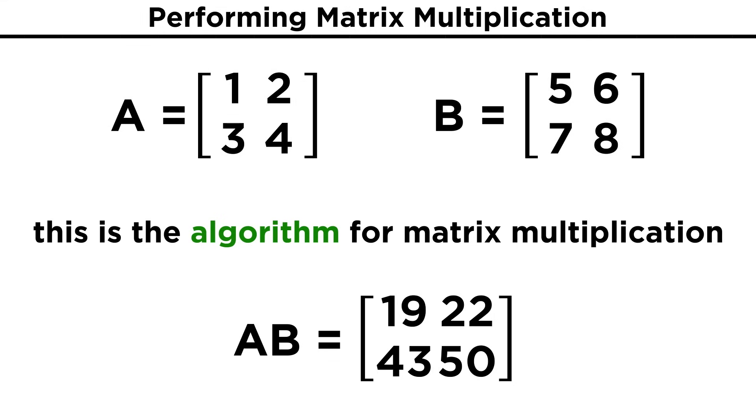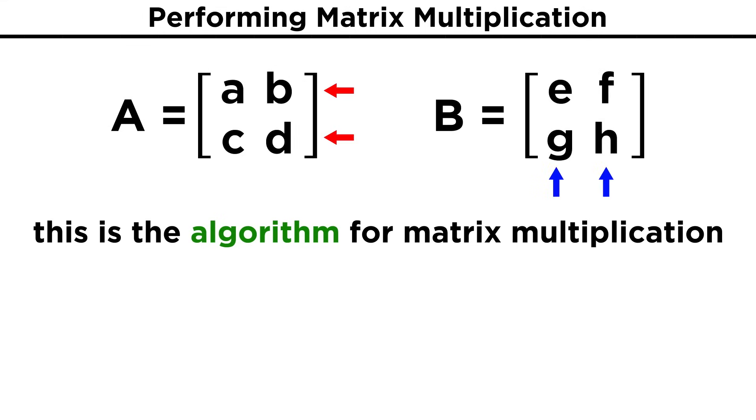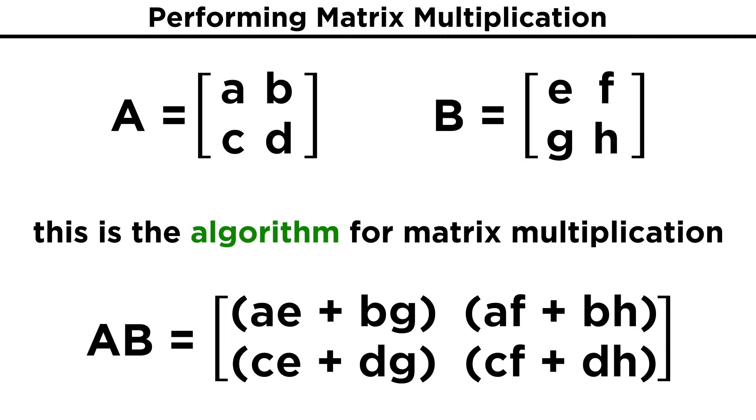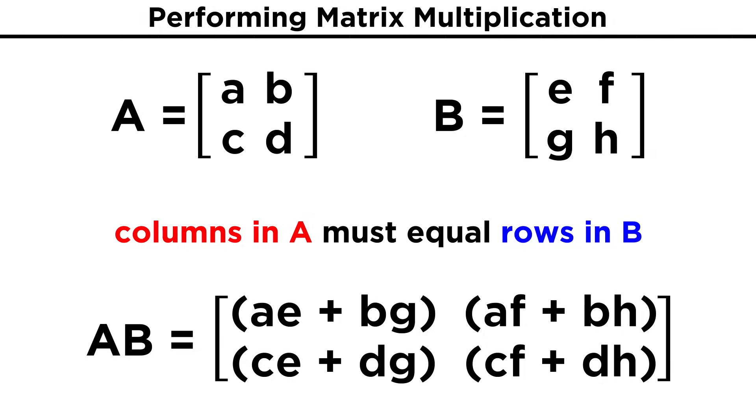This is the algorithm we will follow for matrix multiplication. We are using rows from the first matrix and columns from the second matrix, and we are finding the sum of the products of the corresponding entries. This explains why the first matrix has to have the same number of columns as the second matrix has rows.